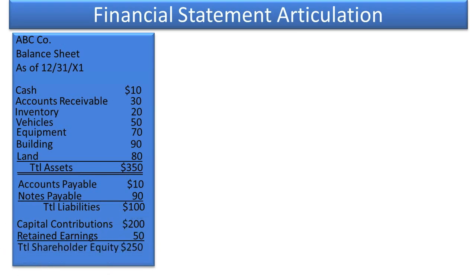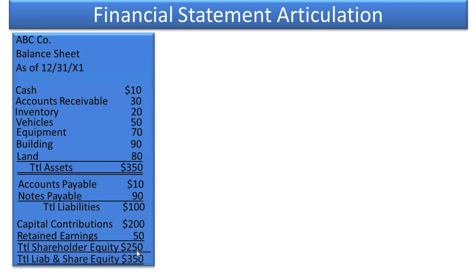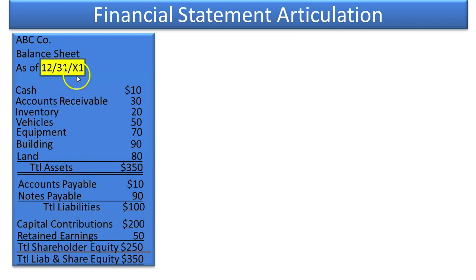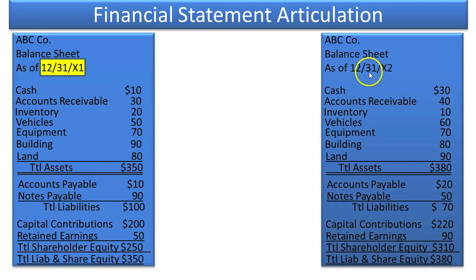Retained earnings represents all the income ever earned that has not been paid out to owners in the form of a dividend. Adding those two together gives total shareholder equity of $250. Total liabilities of $100 plus equity of $250 gives $350 in total liabilities and shareholders' equity. That was at the end of December 31, X1. If we jump ahead one year to X2, these account balances are going to change because it's a running business.